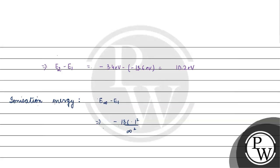At infinite distance, n goes to infinity, so the energy term minus 13.6 by n² goes to zero. Overall value becomes zero minus of E1, which is minus 13.6. So the final ionization energy is 13.6 electron volt.